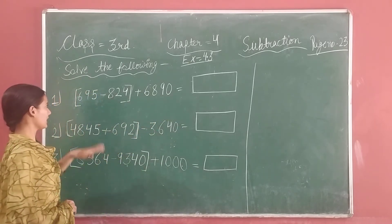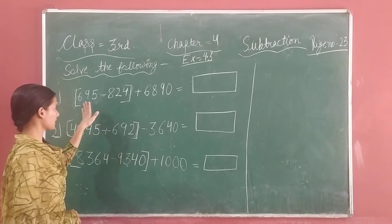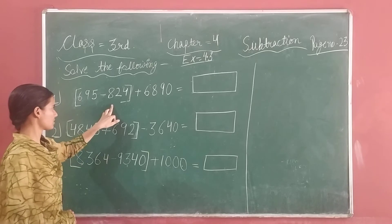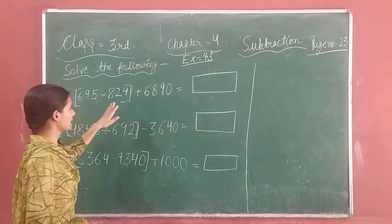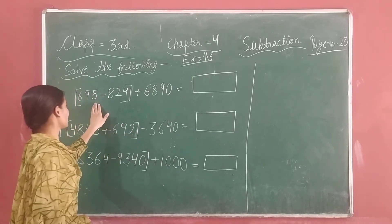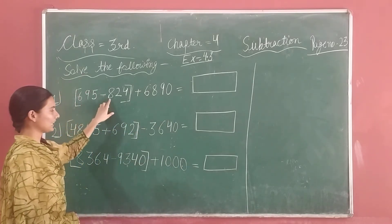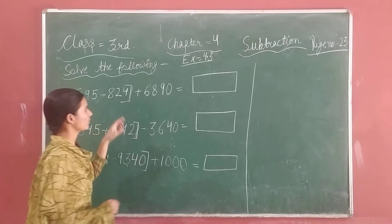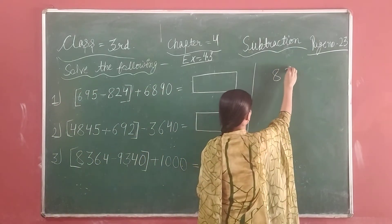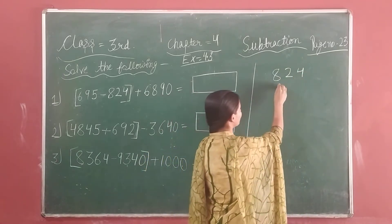First, we look at the brackets — the number of brackets between the two pieces. So let us start. We will call 824, and next we will call 695.